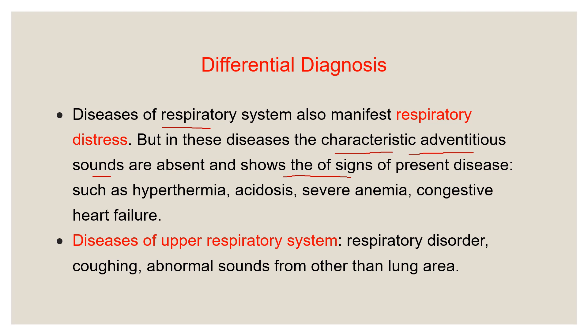The diseases that cause respiratory distress include hyperthermia, acidosis, severe anemia, congestive heart failure, and many other diseases. Diseases of the upper respiratory system generally produce respiratory disorder, coughing, and abnormal sounds from areas other than the lung. If lung is involved, by stethoscope one can diagnose that by auscultation. If there is disease of upper respiratory system, also with the help of palpation, percussion, and auscultation, we can differentiate that the disease is in the upper respiratory system.